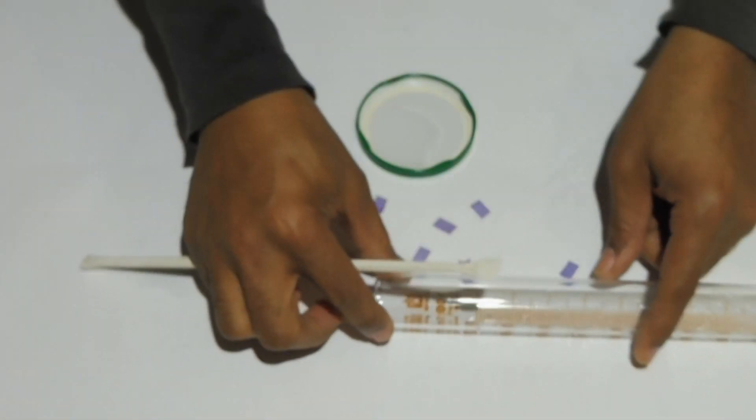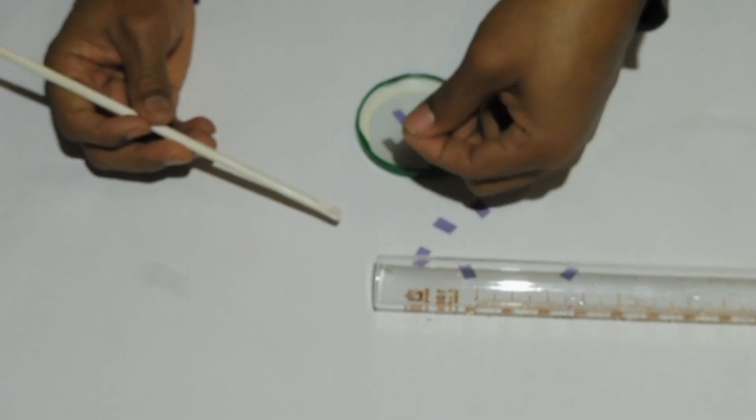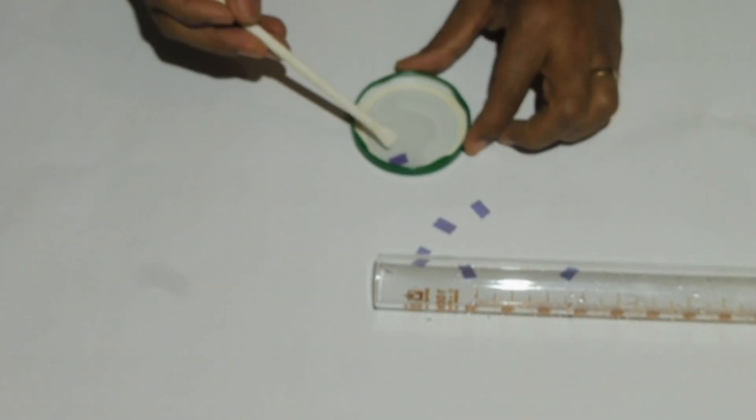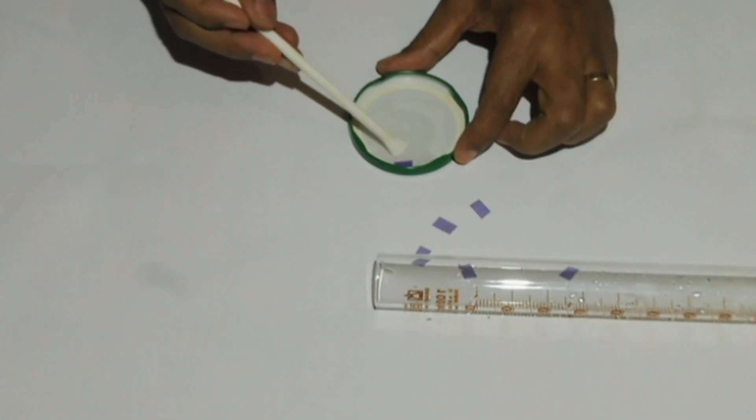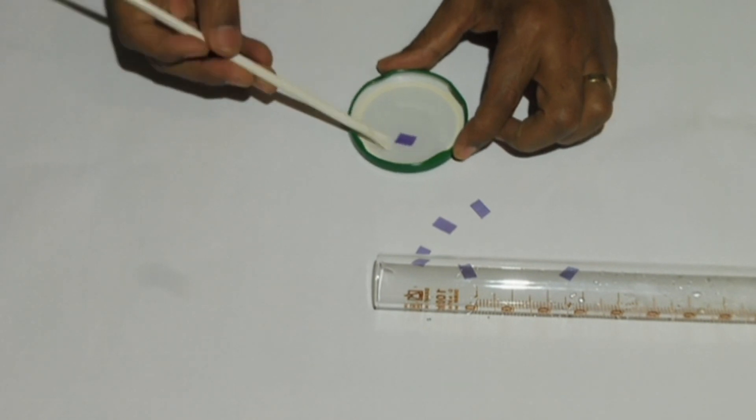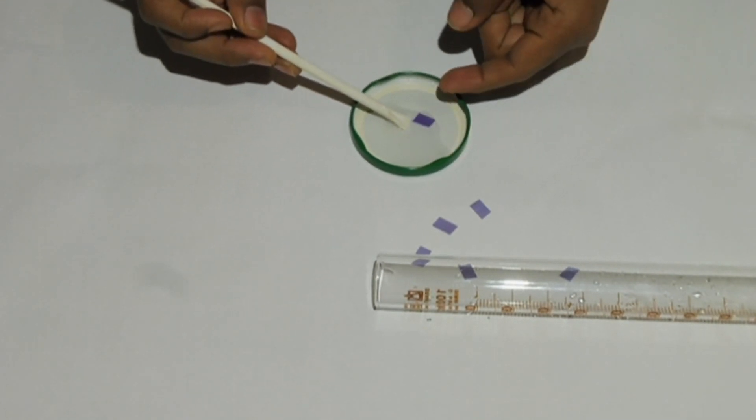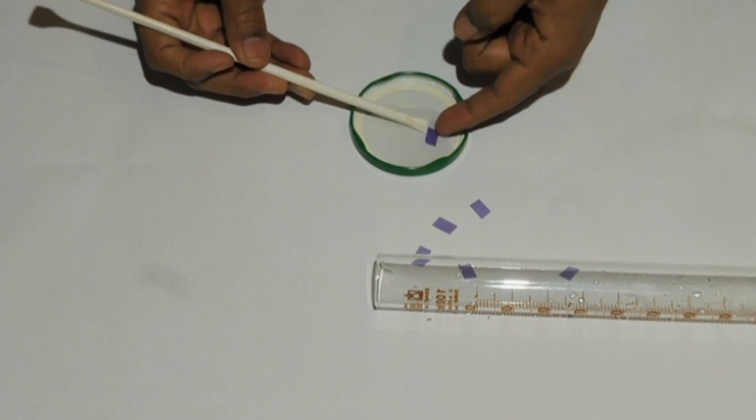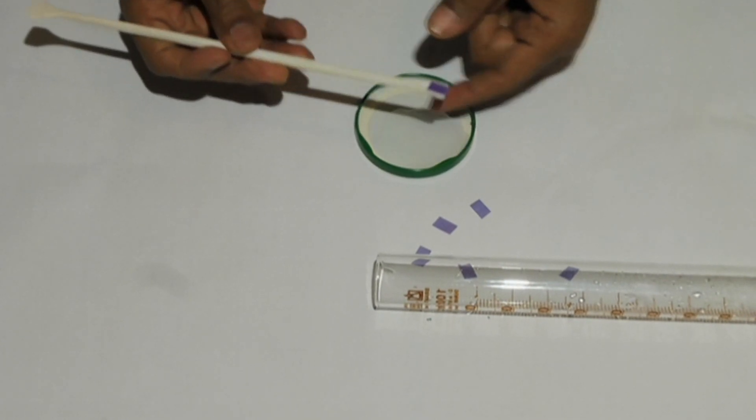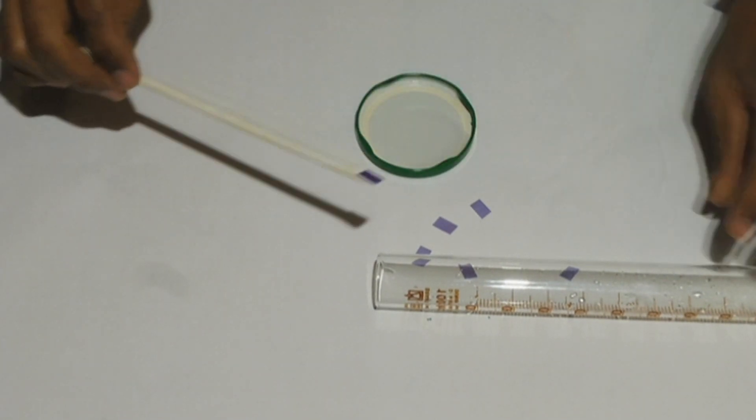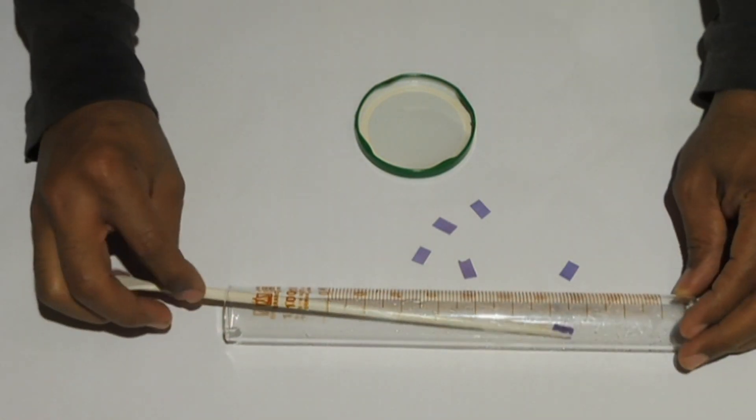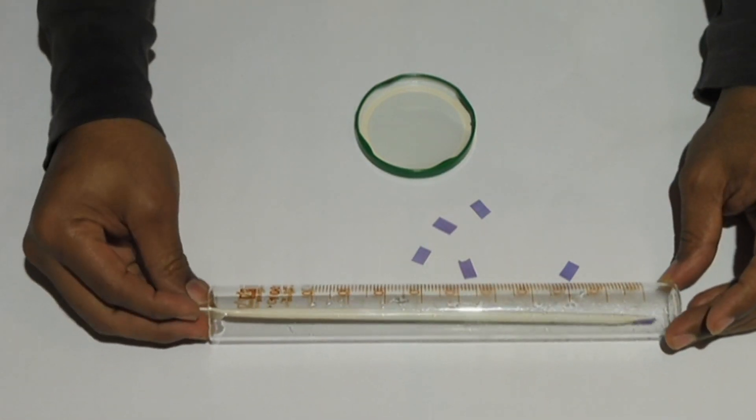I will pick up one piece of litmus paper and dip it into water. Use the stirring rod to take the litmus paper from the water and then slowly insert the litmus paper into the cylinder starting from the far end.